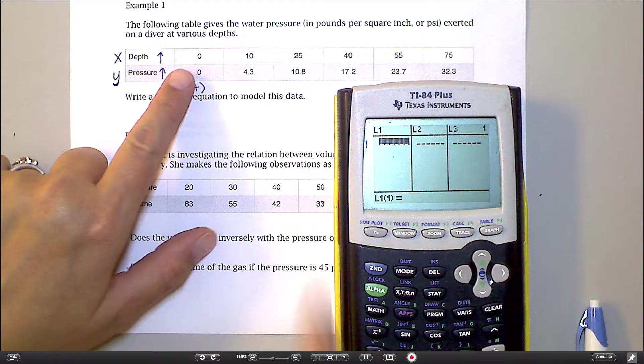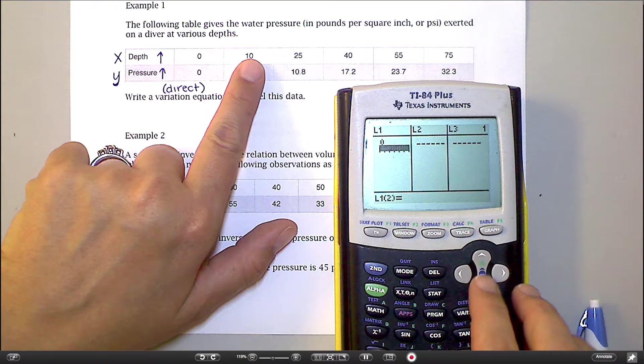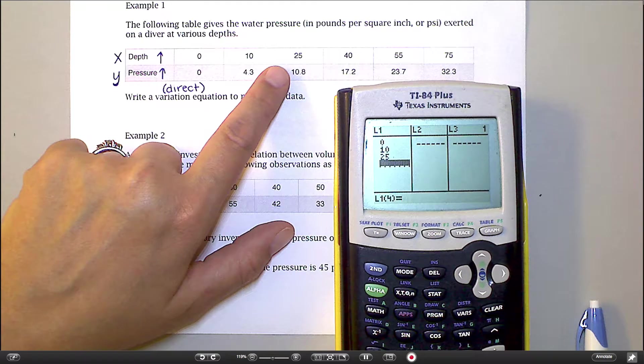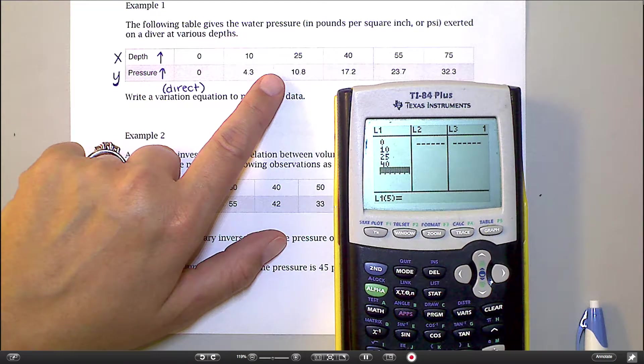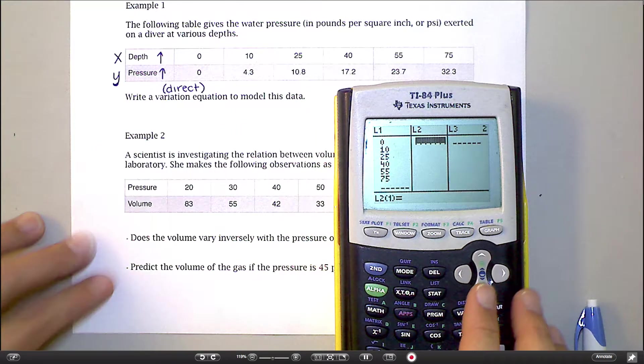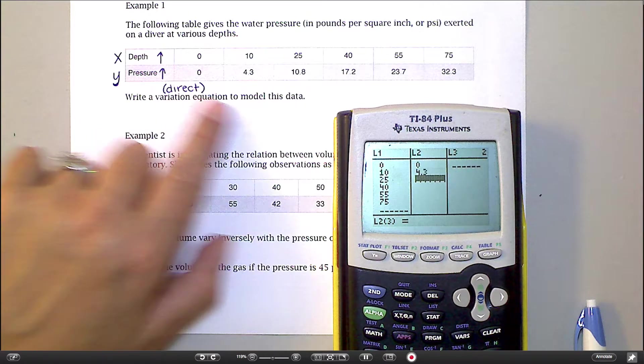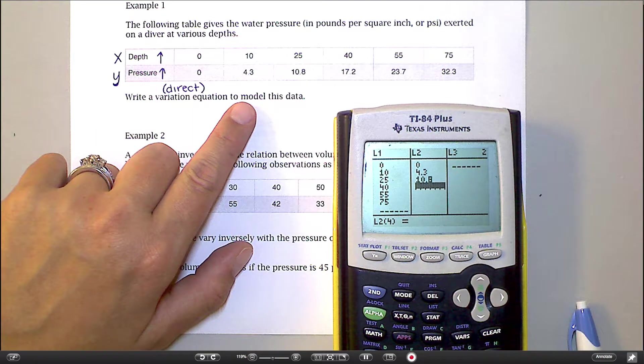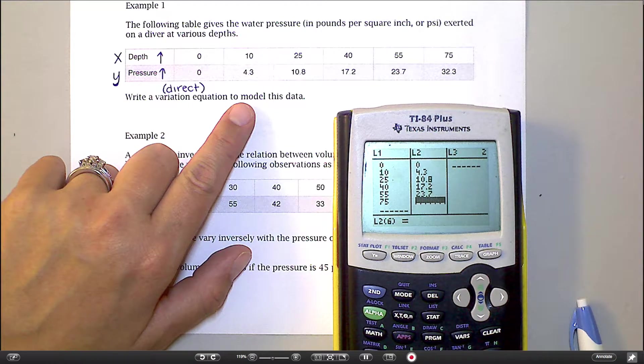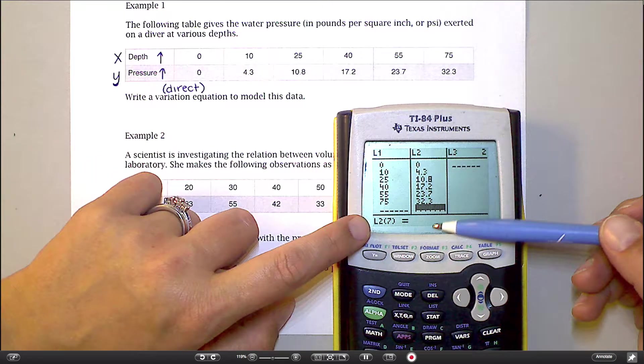And now under list one, I'm going to go ahead and type in my independent variable. So 0, 10, 25, 40, 55, and 75. And then in list two, I'm going to do my other numbers. So 0, 4.3, 10.8, 17.2, 23.7, 32.3. So you should have the same number of things in list one and list two.